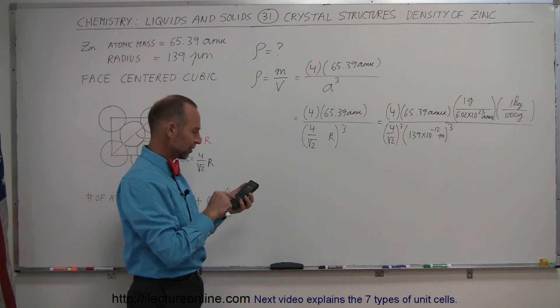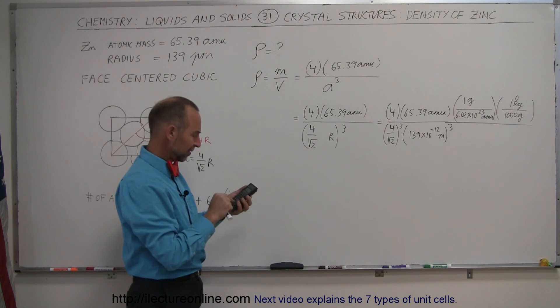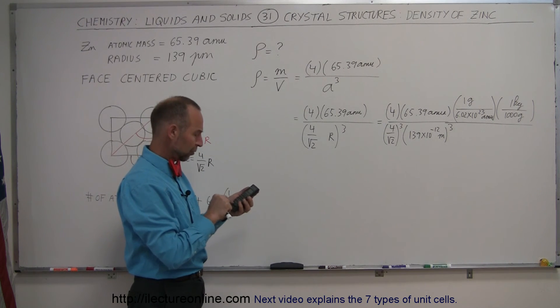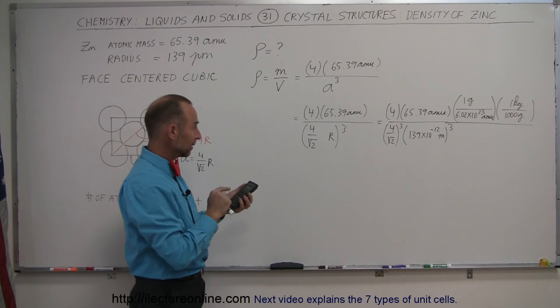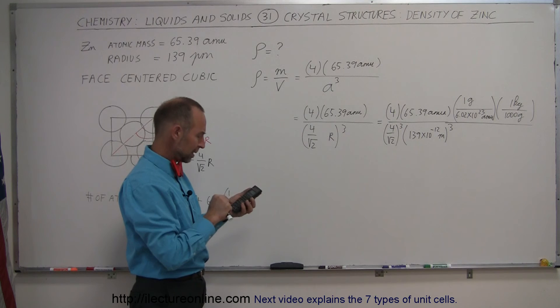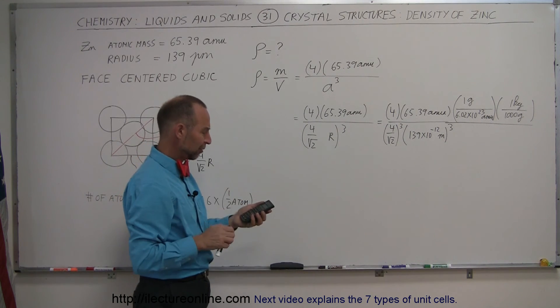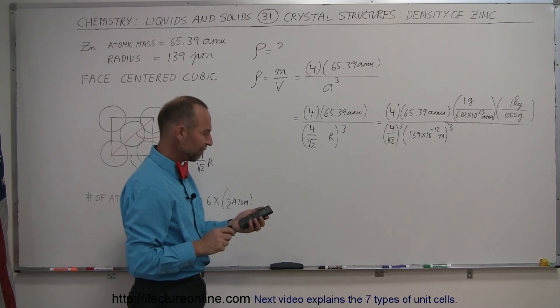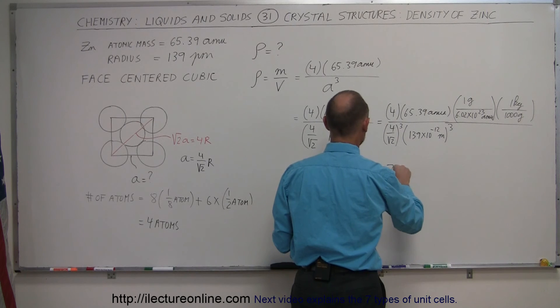We have four times 65.39 divided by 6.02 e to the 23rd, divided by 1,000, divided by 64 times 2 times the square root of 2, and divided by 139 e to the 12 minus, and then we cube that equals, and there we go, much better, 7.15 or 7,150 kilograms per cubic meter.